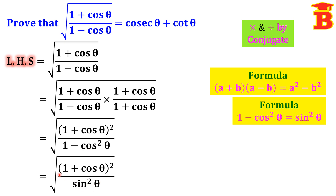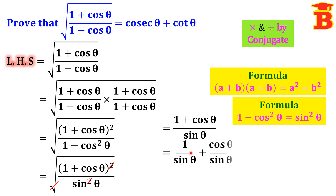Note that outside we have a square root, and inside we have a square in both the numerator and the denominator. So we can cancel the square root and the square. After canceling, the next step gives us (1 plus cos theta) divided by sin theta. The right hand side is cosecant theta plus cot theta, so we need to separate the terms: 1 over sin theta plus cos theta divided by sin theta.